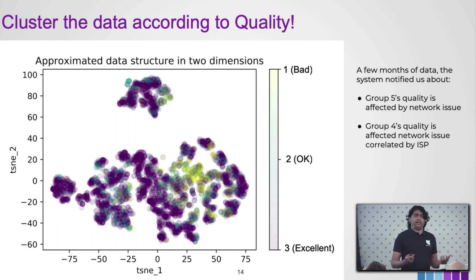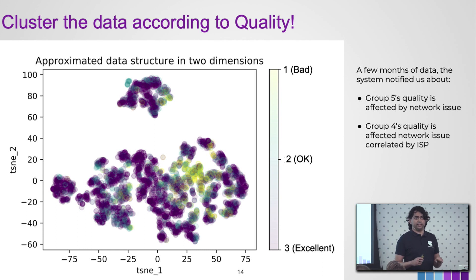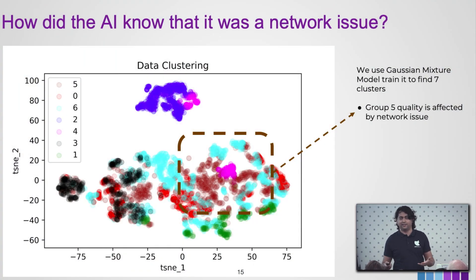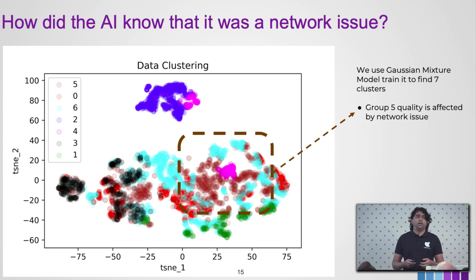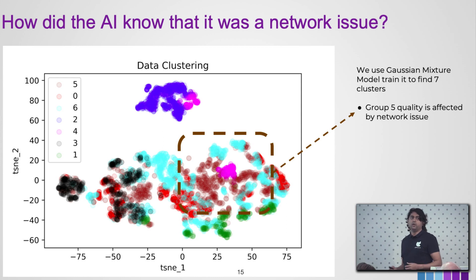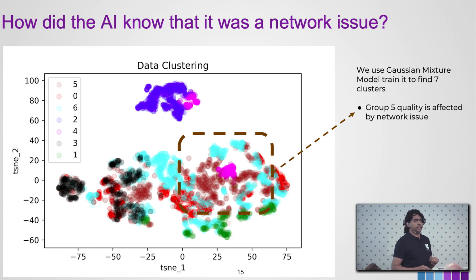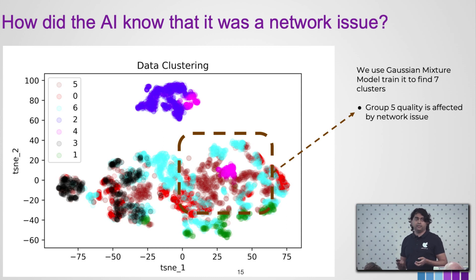The system said: group five's quality is affected by network issues — it doesn't know what those things are — and group four is also affected by network issues, but correlated to an ISP. That was compelling because it found two groups and separated them. So we said, 'tell us more.' As engineers we said, now we need to investigate if the AI is actually correct, because we had no clue what it was telling us or why. So we said, 'show us where group five is.' Group five is the brown cluster, encompassed by the light blue, and the purple in the center is group six.